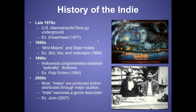Going into the 2000s, most indies are produced and distributed through major studios. You might say, 'Wait, I thought an indie film can't have anything to do with a studio.' Historically that's true, but because it's so hard to get financing, a small production company will work with a studio to ensure distribution. In the 2000s, 'indie' also becomes a genre descriptor — like indie music — more of a vibe and less defined strictly by financing. Juno is an example of that.